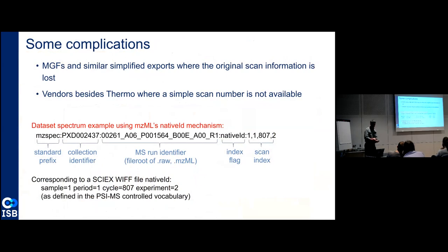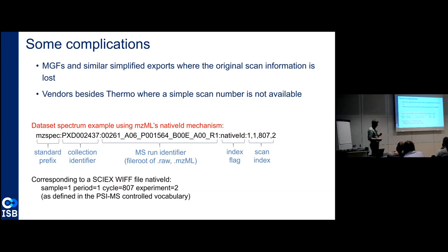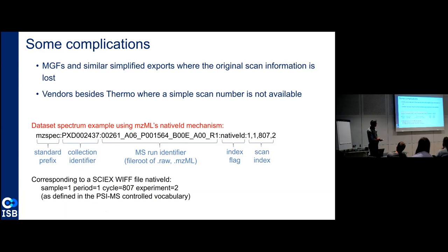There are some complications. One complication is MGF files — a lot of people convert their MZMLs or raw files to MGF files, and often the original scan information is lost during that conversion. It doesn't have to be — there is an MGF keyword called 'scans' that can preserve this information if a good converter keeps it. Some converters actually put the scan number in the title string. But it seems like often during conversion it's lost, and I think that's the biggest problem we're facing. We always want to be able to link any spectrum back to the original data.